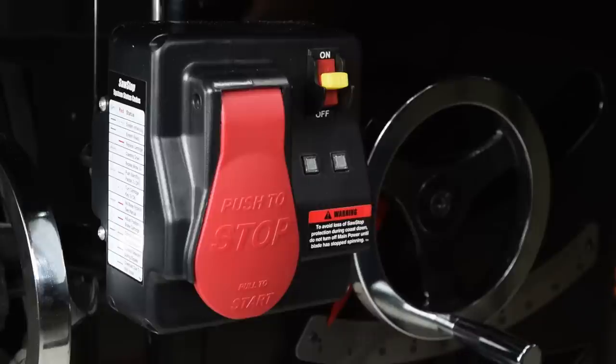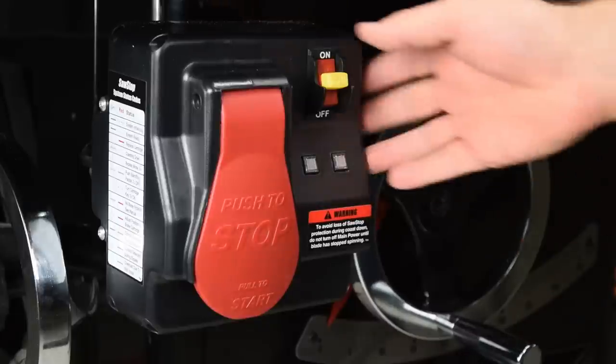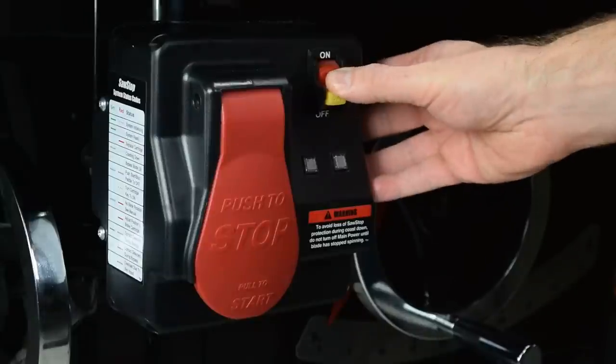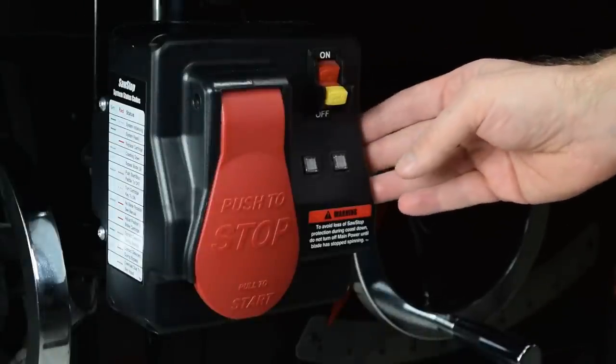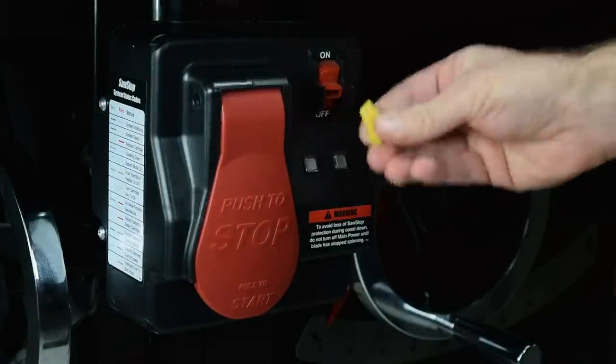First, disconnect power to the saw. Follow the proper lockout procedure. Turn off the main power switch, and then remove the lockout key.